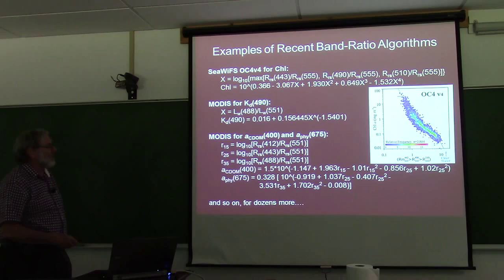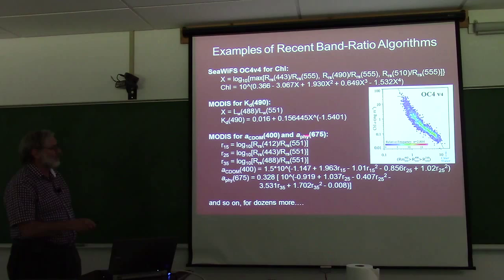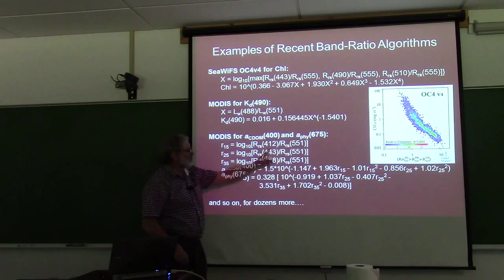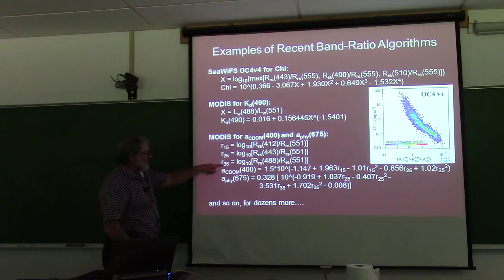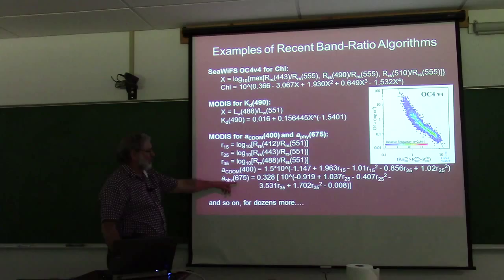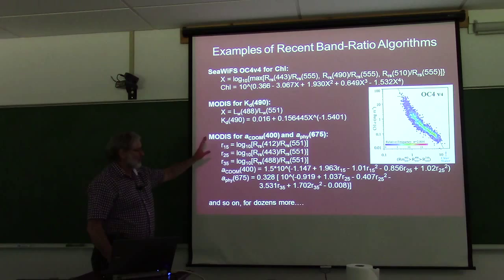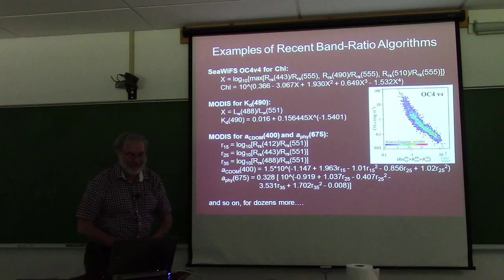Here's a similar formula: MODIS's formula for KD at 490 is the ratio of 488 to 551 plugged into a little formula. MODIS's formula for ACDOM at 400 and phytoplankton absorption at 675 says: compute three ratios — 412 to 551, 443, and 488 — then plug them into a fitting formula. For phytoplankton, different ratios are squared and combined. It's just a fit to some data. There's nothing more in any of these statistical methods than taking data and getting a best-fit curve, and in practice forgetting about the size of the errors.